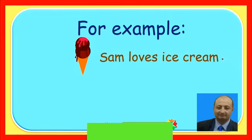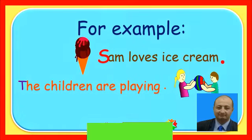A sentence always begins with a capital letter and ends with a full stop. For example, 'Sam loves ice cream.' In this sentence, the letter S is written in capital form and the sentence ends with a period or full stop.